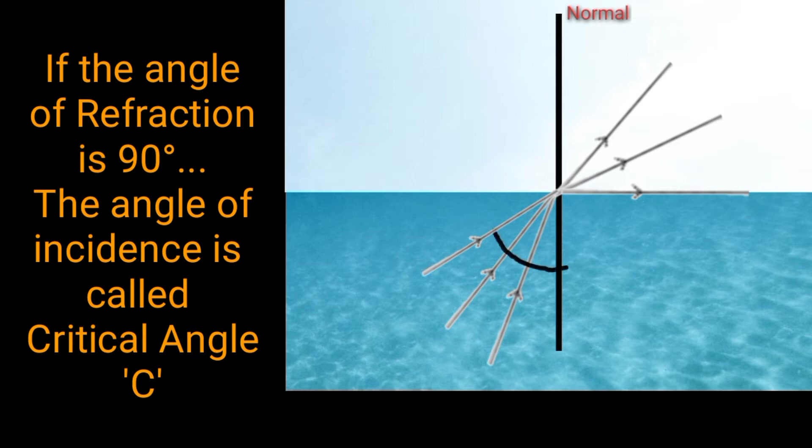For a particular angle of incidence, the angle of refraction is equal to 90 degrees. This incident angle is called the critical angle.